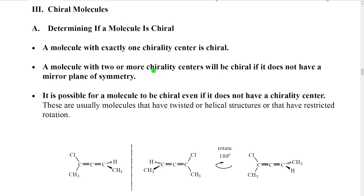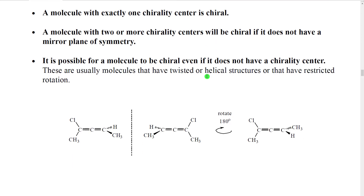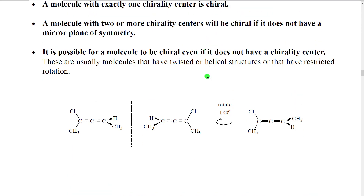A molecule with two or more chirality centers is most of the time chiral. However, if that molecule also has a mirror plane of symmetry, it will not be chiral — we're going to see that those molecules have a special name. I do want to warn you, however, that it is most definitely possible for a molecule to be chiral even if it doesn't have a chirality center.